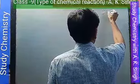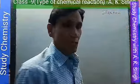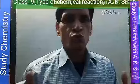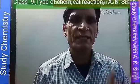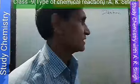Let us see today's topic: types of chemical reactions. First — addition reaction. A chemical reaction in which two or more substances combine chemically to form only one single new compound is called a direct combination or addition reaction.